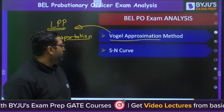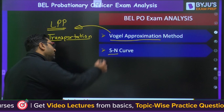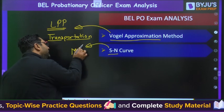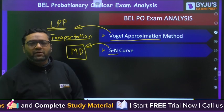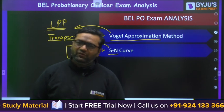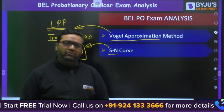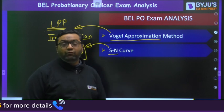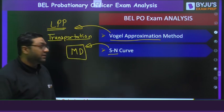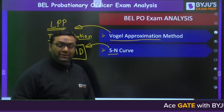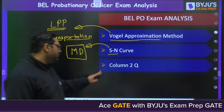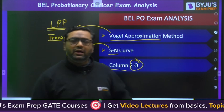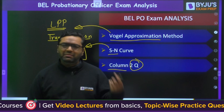Next is the SN curve from machine design. This is so important that it also came in last year's GATE. SN curve is very important — it is plotted on a log-log scale from the R.R. Moore experiment, also called the Wöhler diagram, which tells us about the endurance limit. One question was there from SN curve. The next topic was Kolam, and two questions were there from that topic.